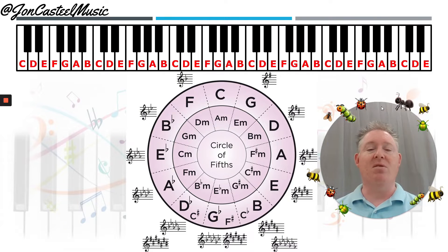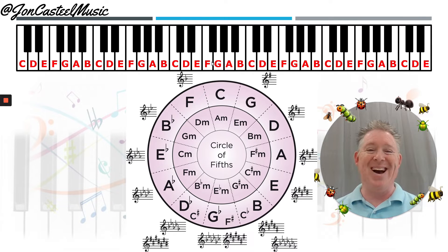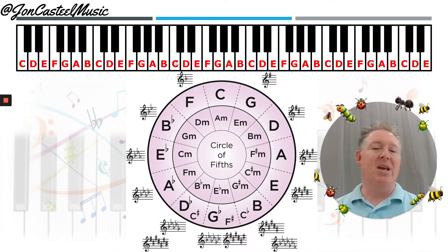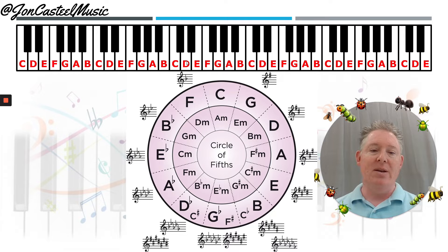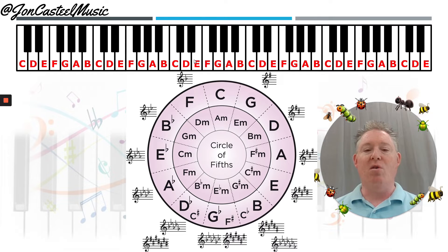I want to spend just a couple more minutes talking about the circle of fifths and show you how to read the chart and how it lines up with what we've learned regarding the diatonic numbering system of our keys on the piano. So for the key of C, for example, we've learned that C is note 1, D is note 2, E is 3, F is 4, G is 5, A is 6, and B is 7.